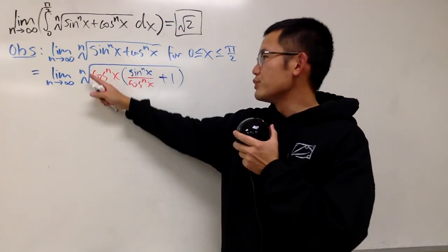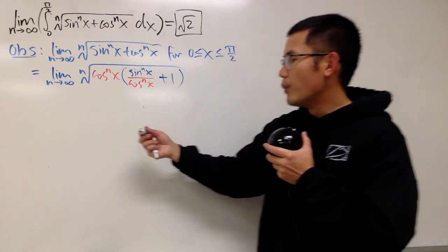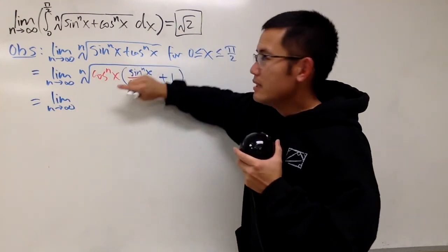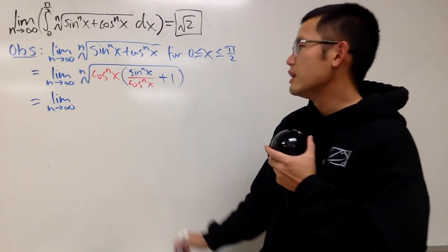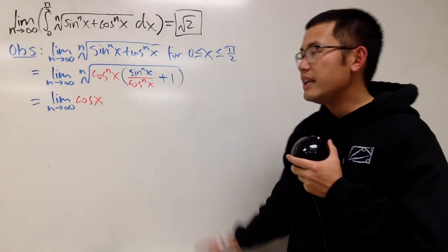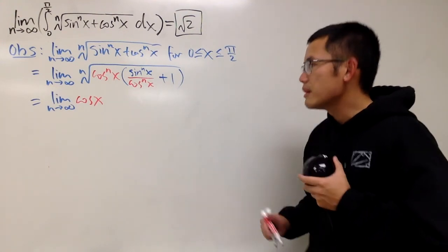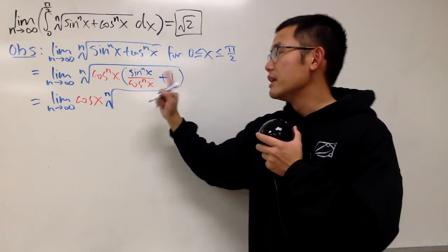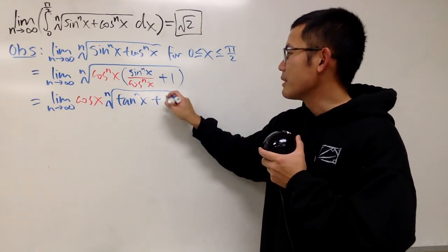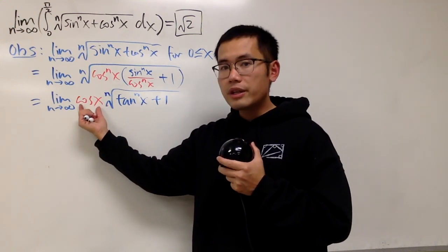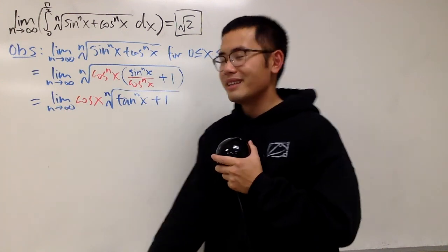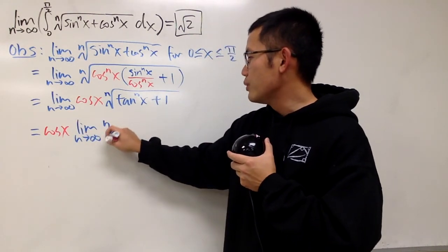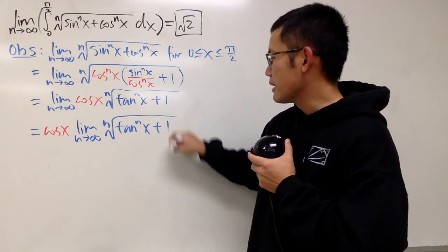Taking the nth root of cos^n(x): the nth power and nth root cancel, giving us cos(x). On this interval cos(x) is positive, so no need for absolute value. For the remaining factor, we have the nth root of tan^n(x) plus 1. Since cos(x) has no n, we can pull it out front. So the expression becomes cos(x) times the limit as n goes to infinity of the nth root of (tan^n(x) + 1).